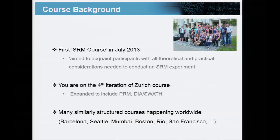The first one was an SRM course in July 2013. The idea was to acquaint participants with theoretical and practical considerations needed to conduct an SRM experiment. Since then it's been run several times and now it's expanded in scope to include discussions about PRM, DIA, and SWATH. It's also expanded a lot outside of Zurich, with many similarly structured courses happening worldwide.